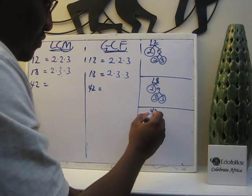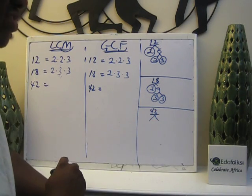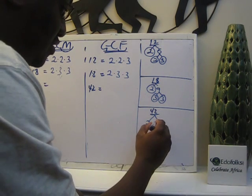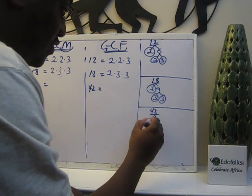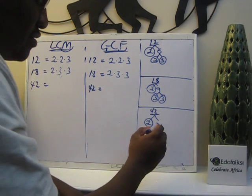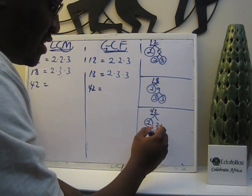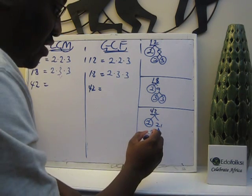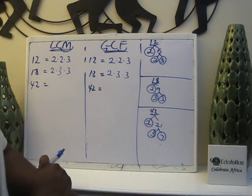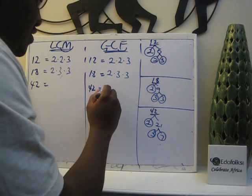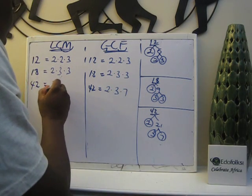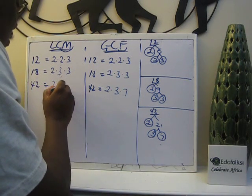For 42: the smallest prime number that can go into 42 is 2. 2 goes into 42 and gives us 21. 2 is a prime number. For 21, the next prime number would be 3. 3 goes into 21 seven times, and 7 is a prime number, so I can stop. So 42 is 2 times 3 times 7.